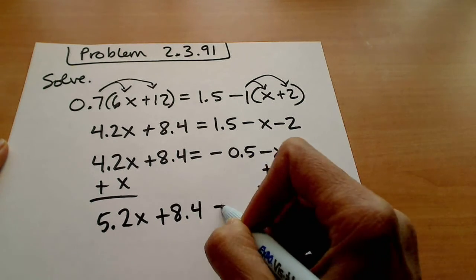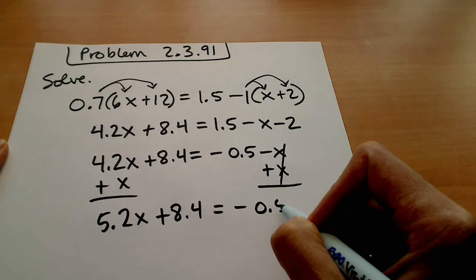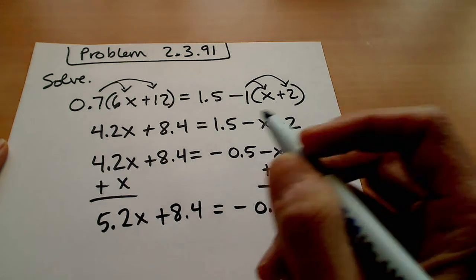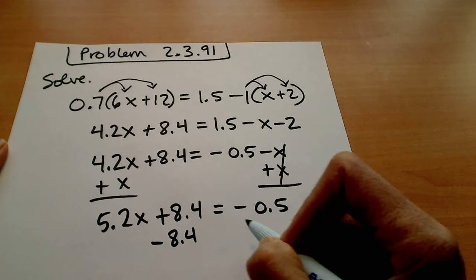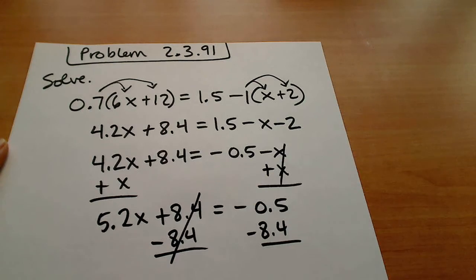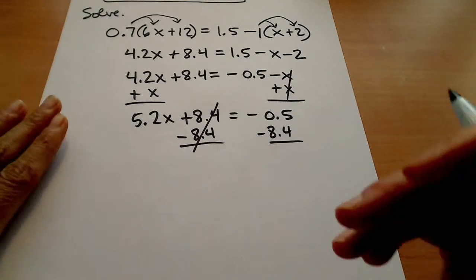Okay, so continuing to solve, we're going to subtract the 8.4 so that we isolate the term that has the variable.